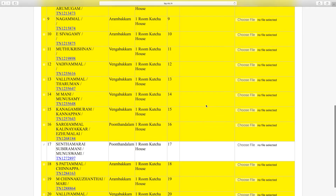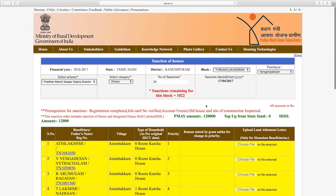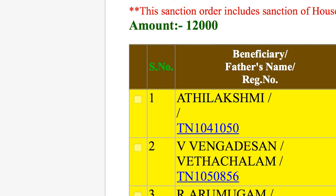You can then select the PMAYG Beneficiaries list in tabular format. You can select the list of priority lists from the table. You can select the serial number, the beneficiary's name, father's name, and the PMAYG registration ID.